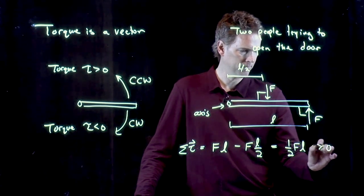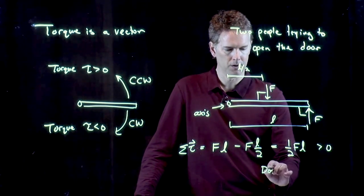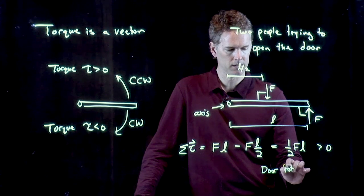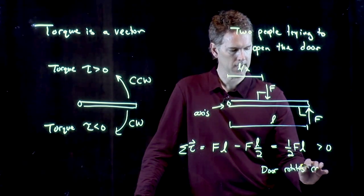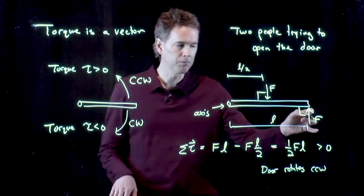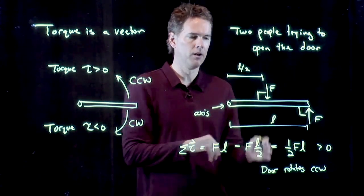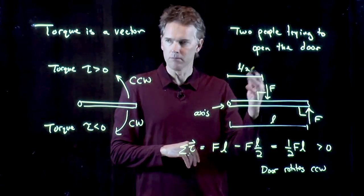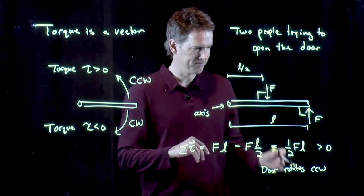This is a positive number, and so the door is going to rotate counterclockwise. This person wins. They are able to get out of the door. The other person clearly gets pushed out of the way.